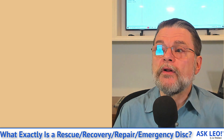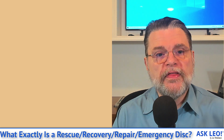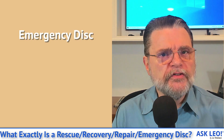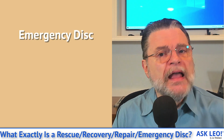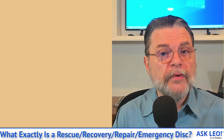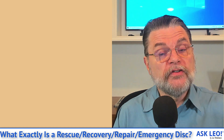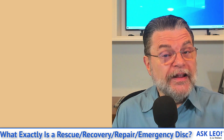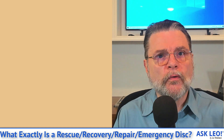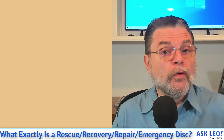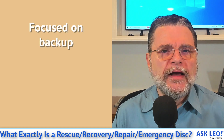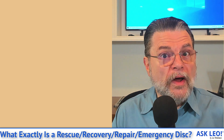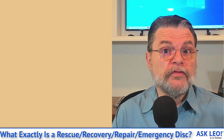I don't have EaseUS Todo installed here, but if I did, it would be the same kind of thing. With EaseUS Todo, they also have the ability to create what they call an Emergency Disk — a disk you would use in an emergency. Same thing as Macrium Reflect: it contains enough of an operating system to run and then EaseUS Todo itself, so you could restore or take a backup image. The whole idea is that for your backup software, the rescue or emergency disk — whatever it's called — is focused on being able to boot into that backup software when you can't boot normally, and restore an image backup taken prior.